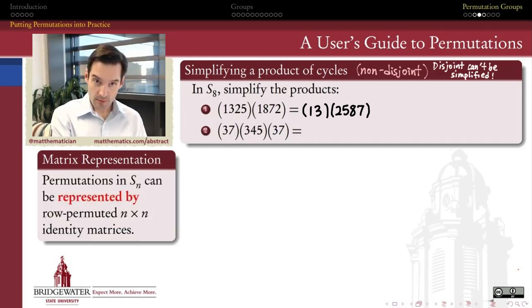A permutation can be represented by an n by n matrix. If I'm permuting n symbols, I can represent that permutation via multiplication by an n by n matrix. To find out which matrix represents a given permutation, all I do is take an identity matrix and permute the rows, or equivalently permute the columns, according to the permutation that I'm trying to work with.